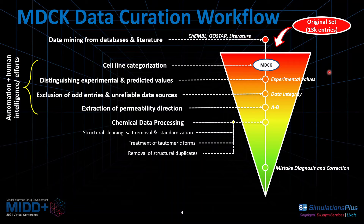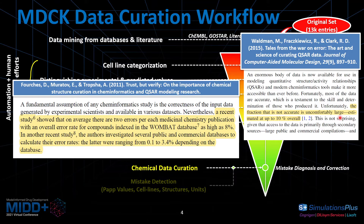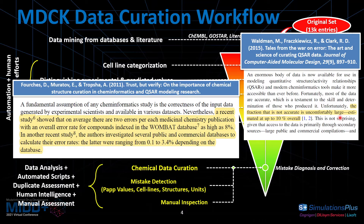This is a very important step. Here it is saying that the error rate for compounds in databases — for example, Wombat — can be as high as 8%, which is a pretty significant number. And from an article from our Simulations Plus company, it also says that the fraction that is not accurate in chemical databases is uncomfortably large, up to 10%. So we put a lot of effort into chemical data curation — meaning we try to detect possible mistakes in the dataset, like PAPP values, biological endpoints, cell lines, structures, and units. We also do a lot of manual inspection.